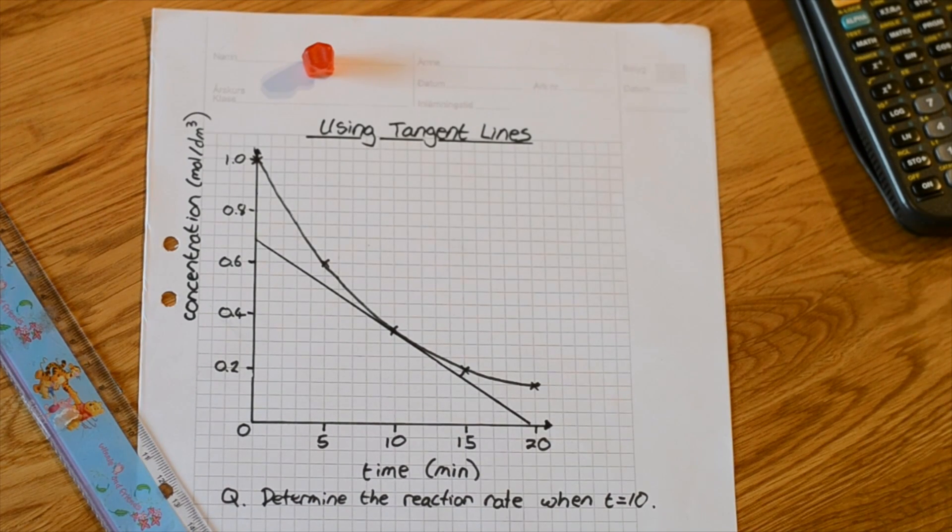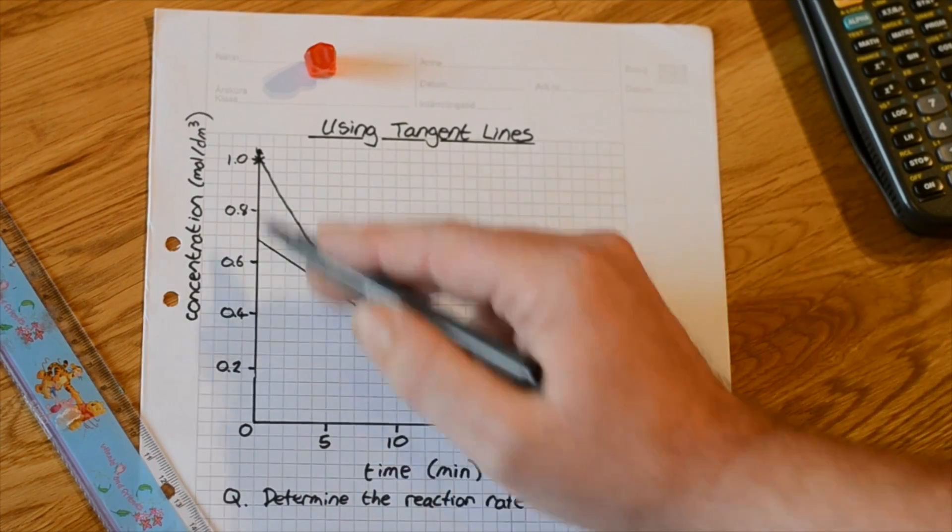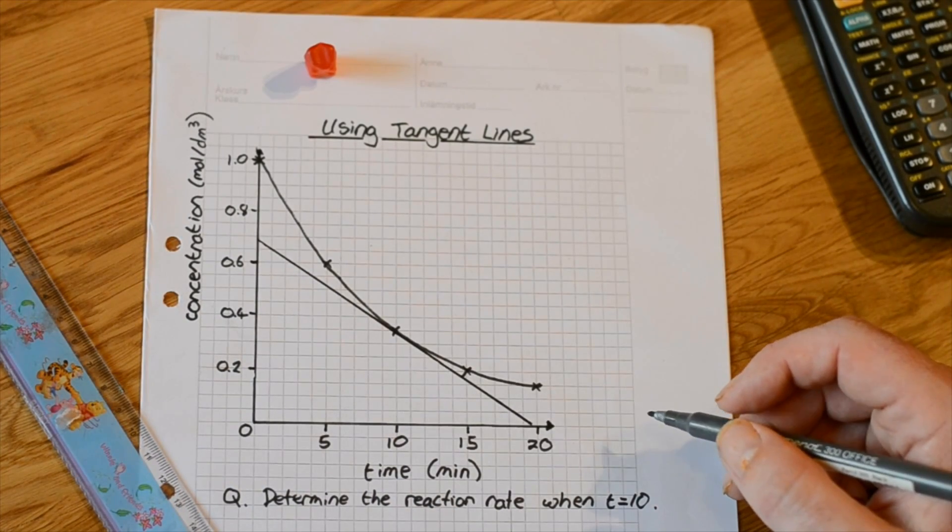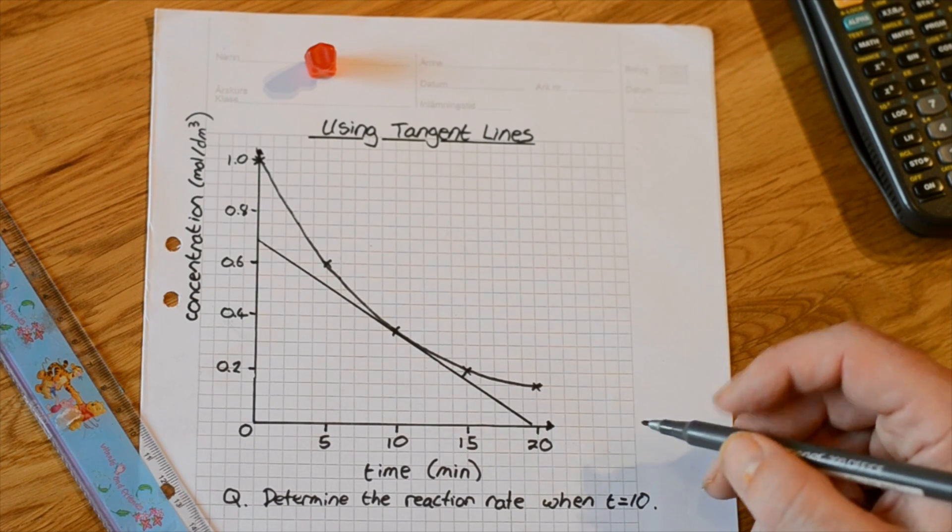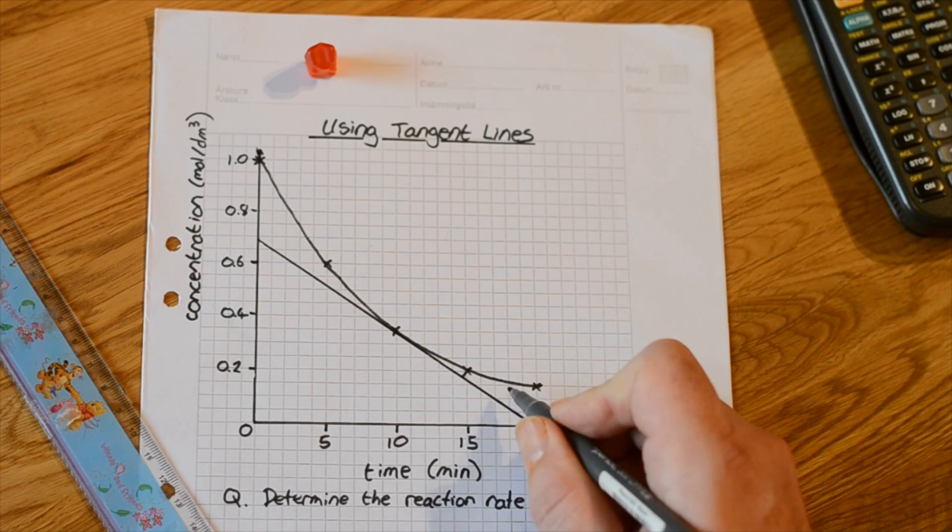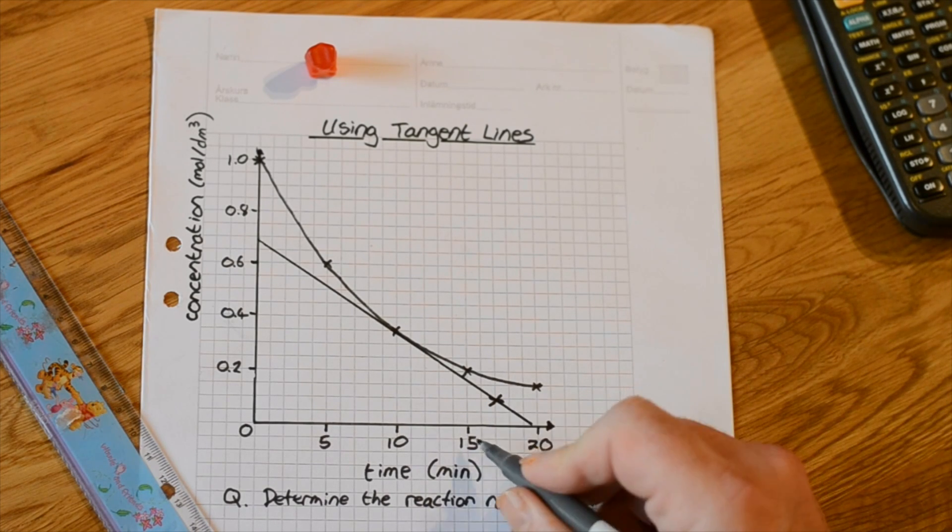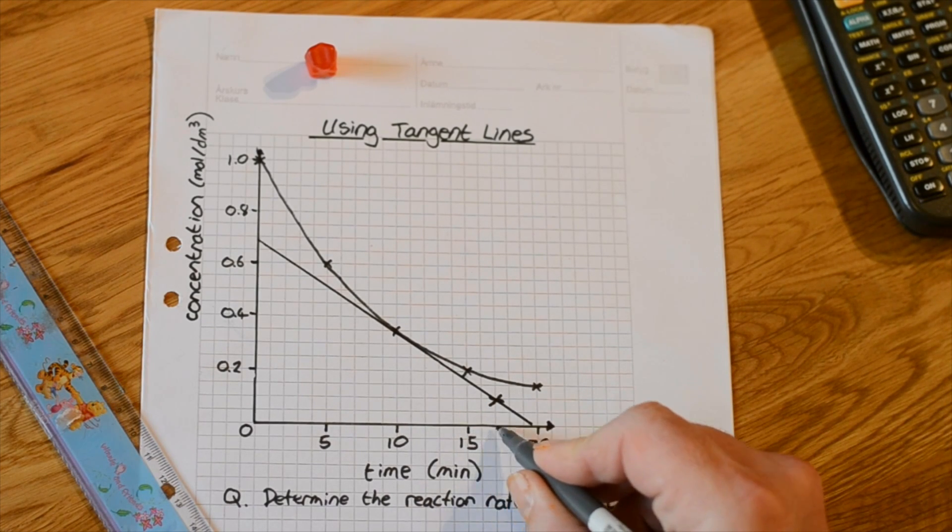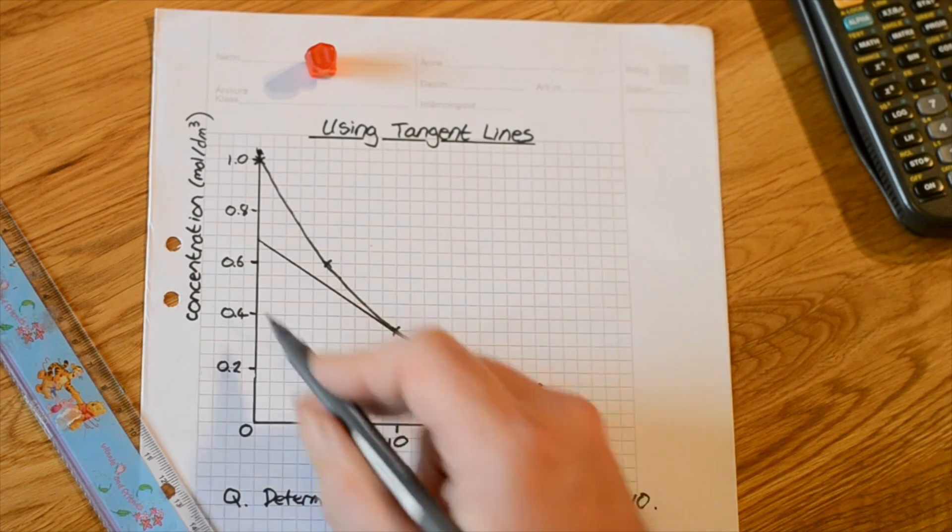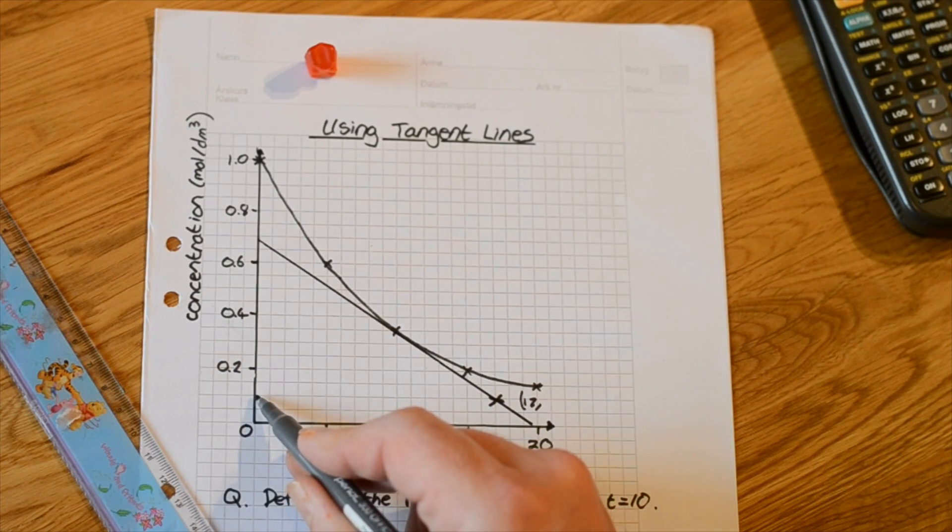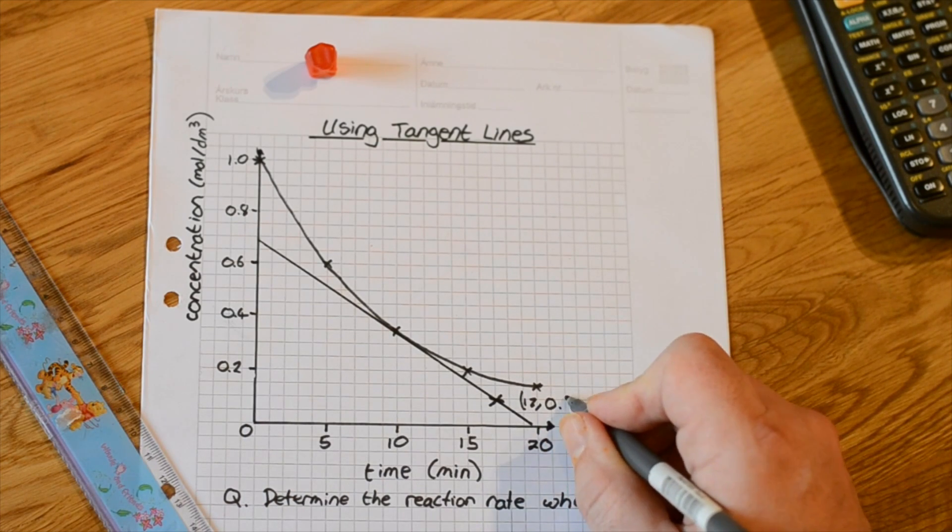We need to calculate now the gradient of this tangent line. We need to find some coordinates along this line where it's easy to read off. We want it to go exactly through a particular point. I think here we have a good spot for reading off a coordinate. The coordinate here is at 15, 16, 17 comma the scale over here. This would be 0.1. That's 17 comma 0.1.